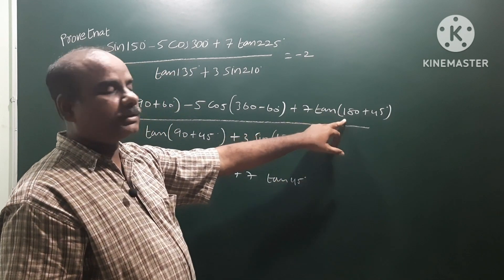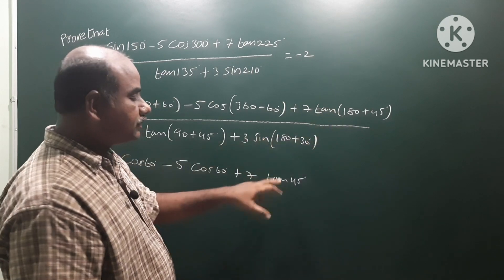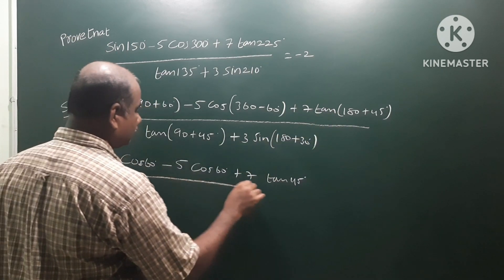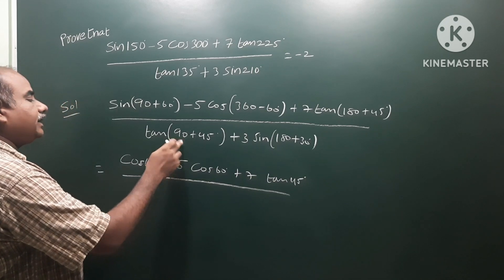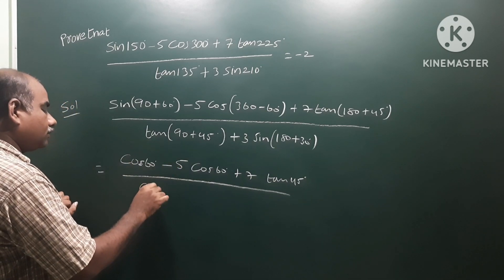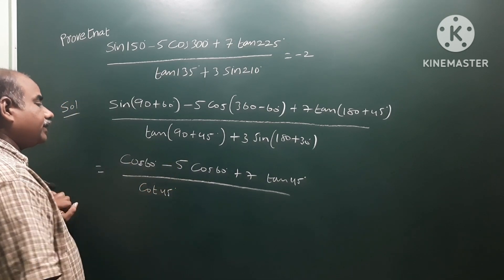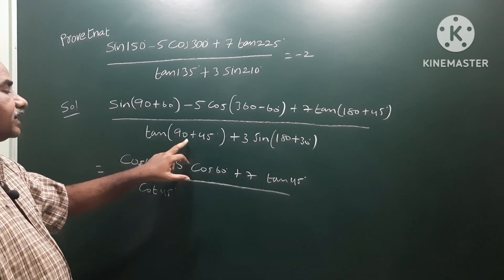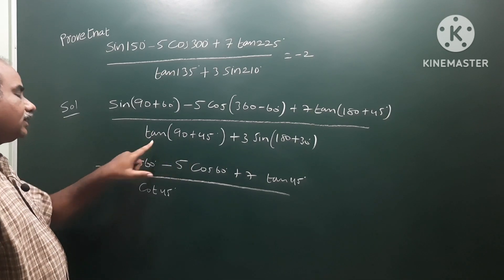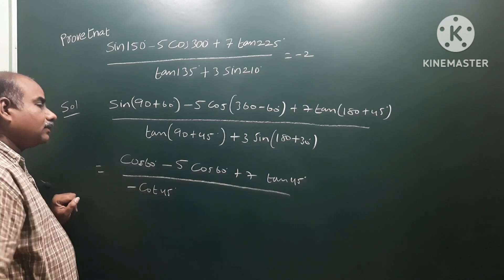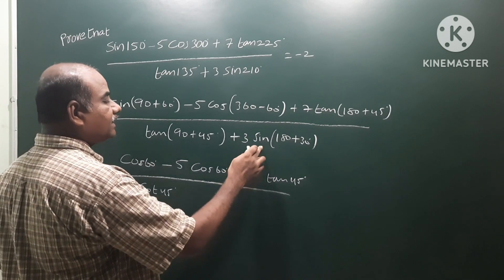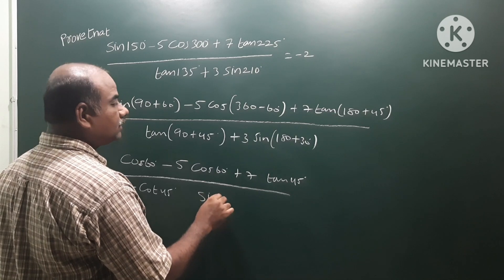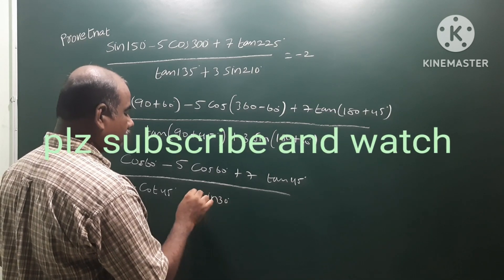For tan(90+45), in the second quadrant tan is negative, so it becomes minus cot45. For sin(180+30), in the third quadrant sin is negative, so it becomes minus sin30.